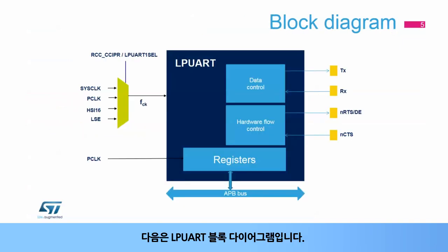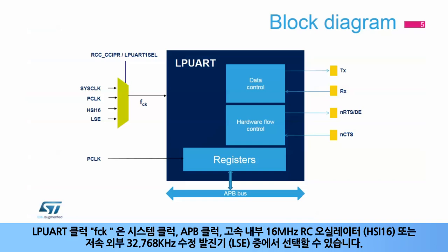Here is the LPUART block diagram. The LPUART clock, FCK, can be selected from among the system clock, APB clock, high-speed internal 16 MHz RC oscillator (HSI-16), or the low-speed external 32.768 kHz crystal oscillator, or LSE.